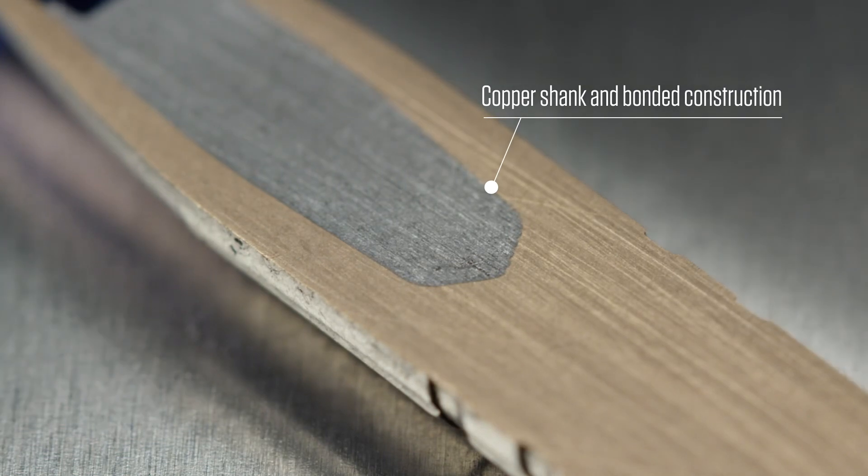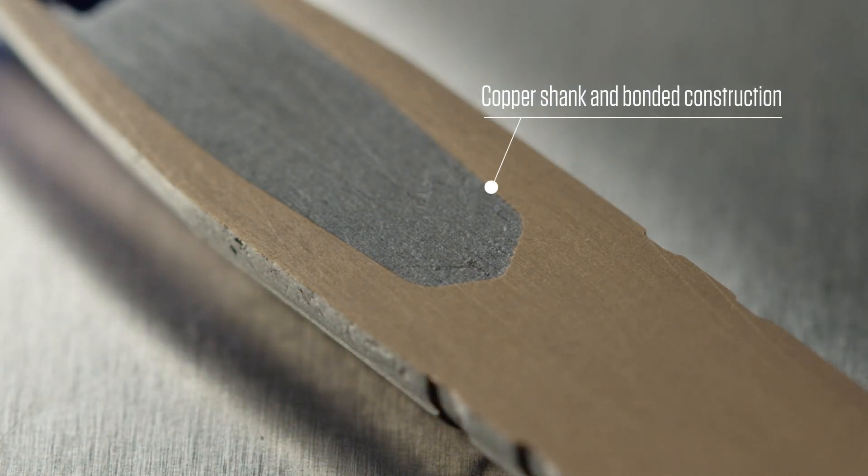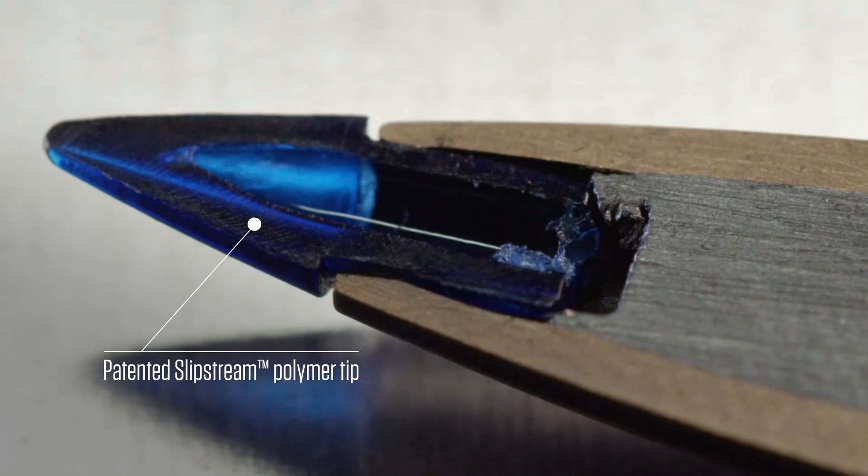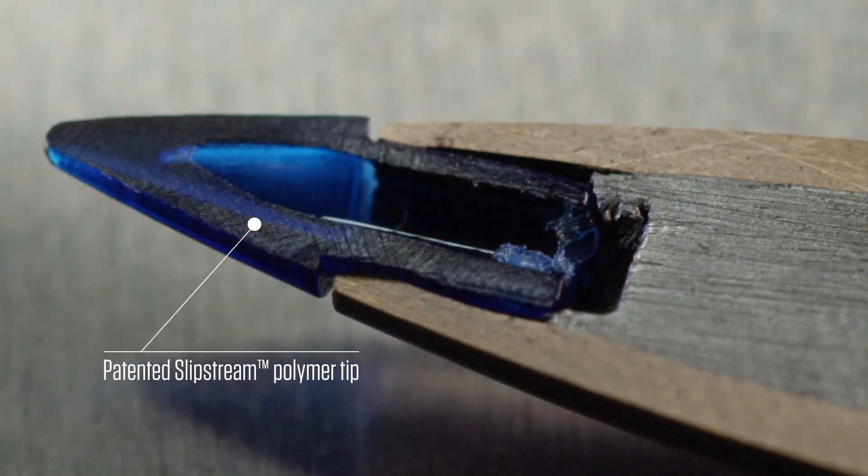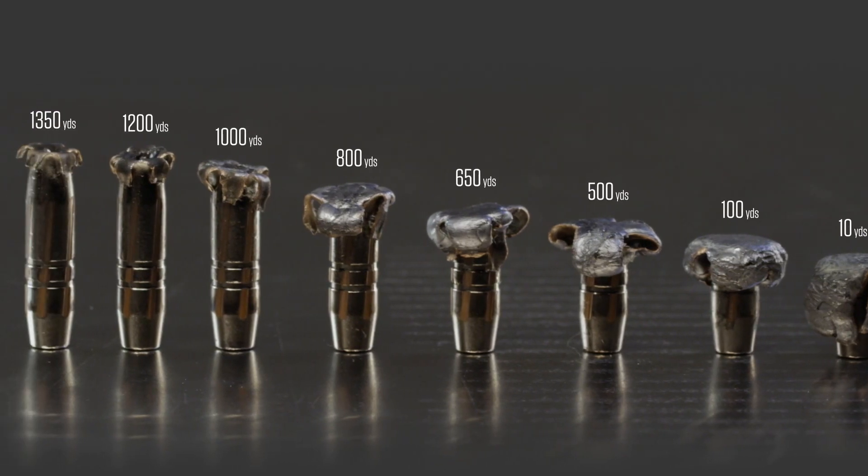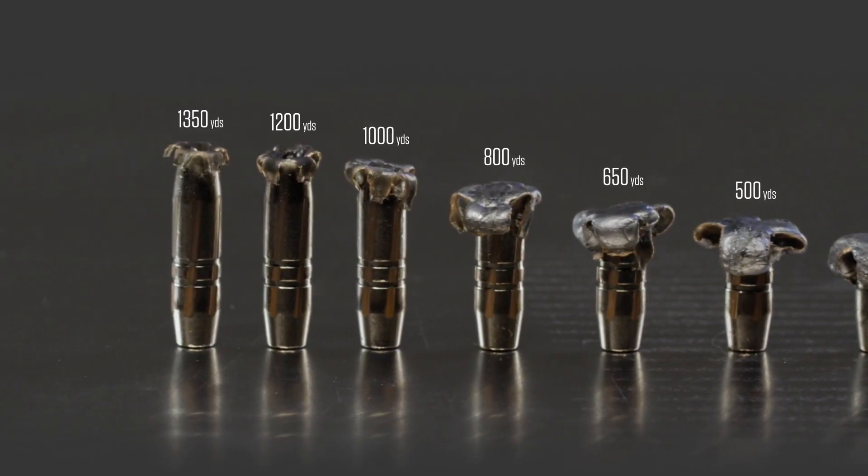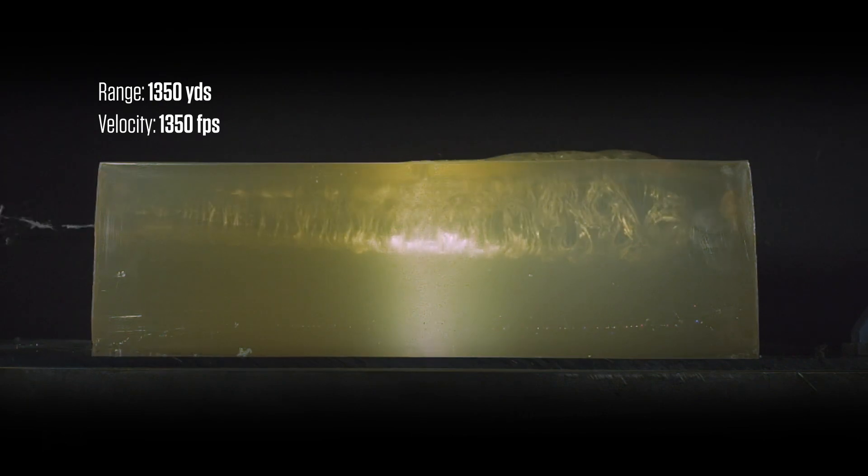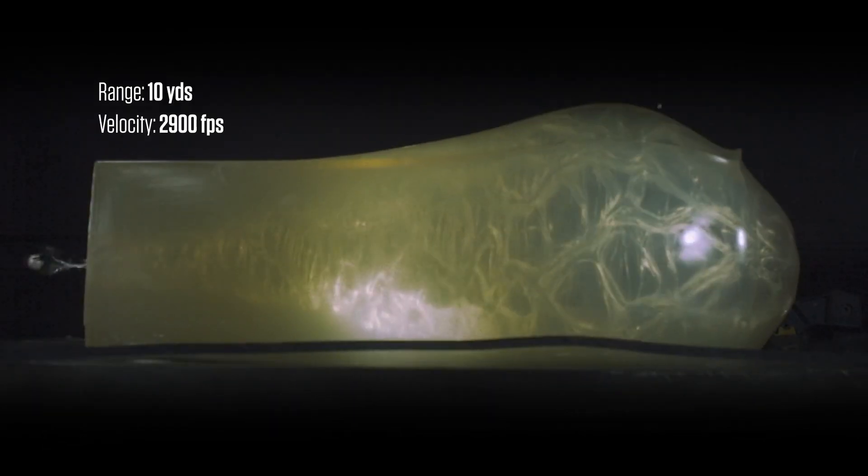The bullet's copper shank and bonded construction retain weight for deep penetration on close targets, while the patented Slipstream polymer tip initiates expansion at velocities 200 feet per second lower than comparable designs for consistent straight-line penetration at extreme ranges where other bullets fail.